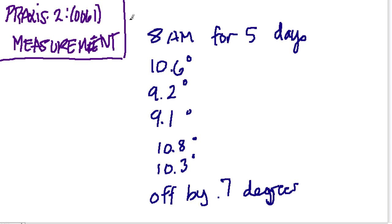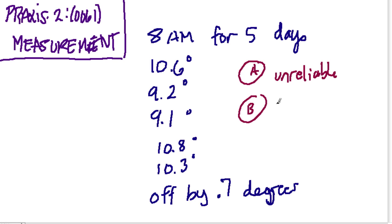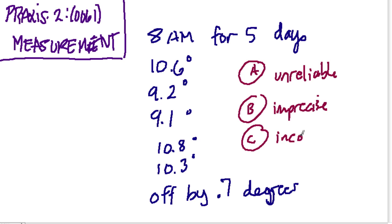Well, I would say do the measurements again, because it's off by 0.7 degrees. But they give us four options. A says the data are unreliable — there's the key word, unreliable. B says the data are imprecise. C says the data are inconclusive. And D says the data are inaccurate.